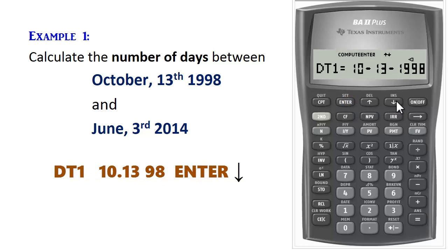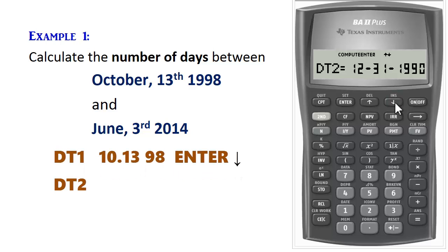Press the down arrow button. It displays DT2, the second date, which is June 3, 2014. So for June, we press 6. 3 is 03, and then for 2014, we do 14. Enter.